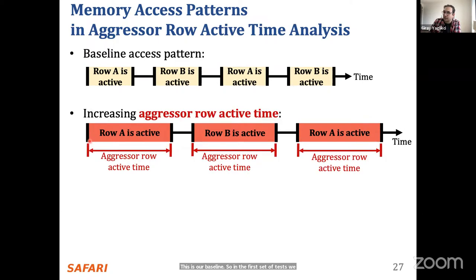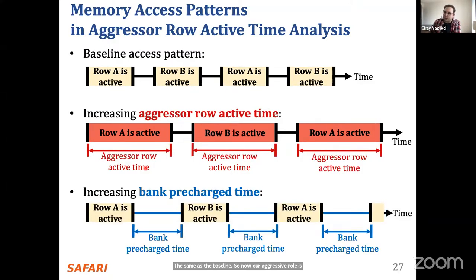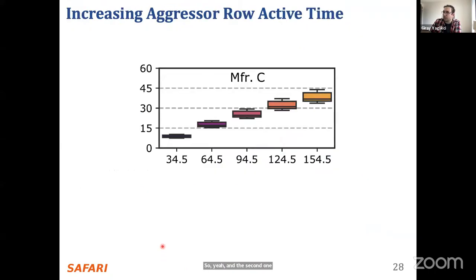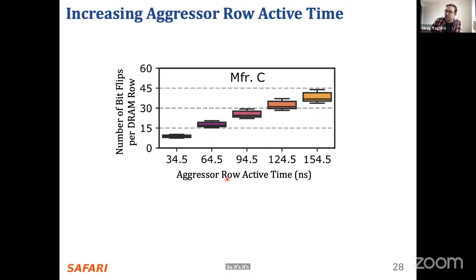Here are the results. On the y-axis, we look at the number of bit flips per DRAM row — the bit error rate — and on the x-axis is the aggressive row's active time. When the aggressive row is active for the minimum 34.5 nanoseconds, the bit count is around a certain baseline. As we increase the active time to about 64.94 nanoseconds in steps, we see a clear increasing trend. Box plots show the distribution of DRAM rows at each active time point.